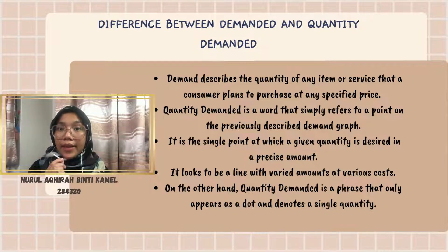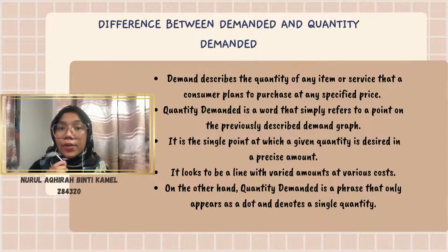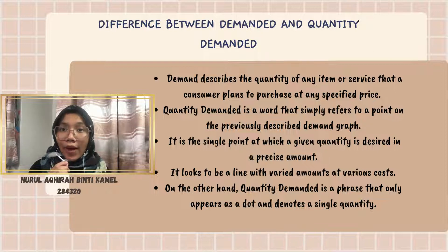The difference between demand and quantity demanded is that demand describes the quantity of any item or service that a consumer plans to purchase at any specific price. Quantity demanded is a term that simply refers to a point on the demand curve graph — it is the single point at which a given quantity is desired at a precise price. On the other hand, quantity demanded appears as a dot and denotes a single quantity.